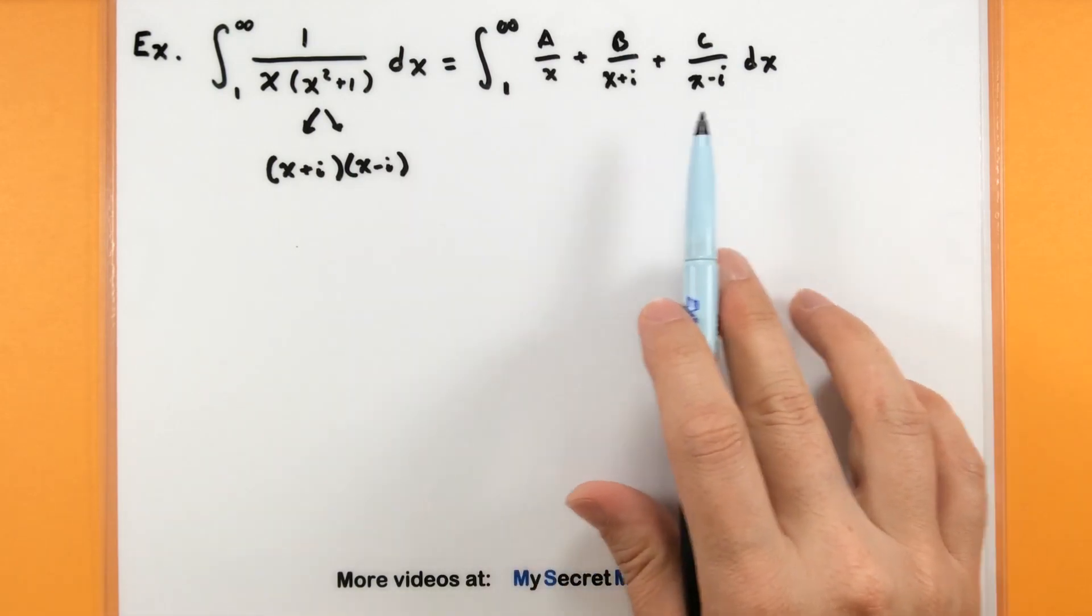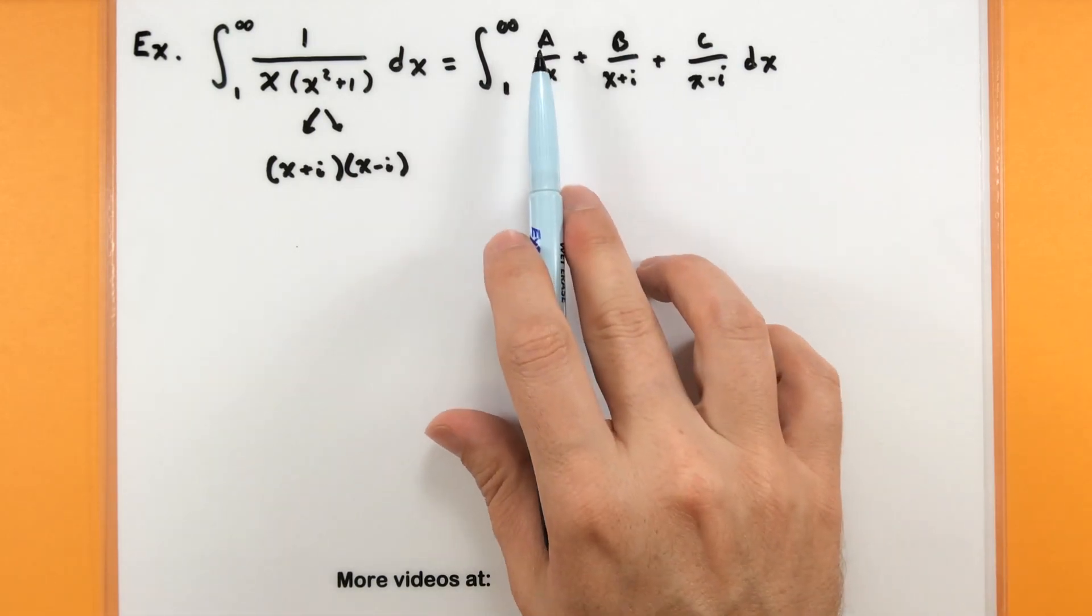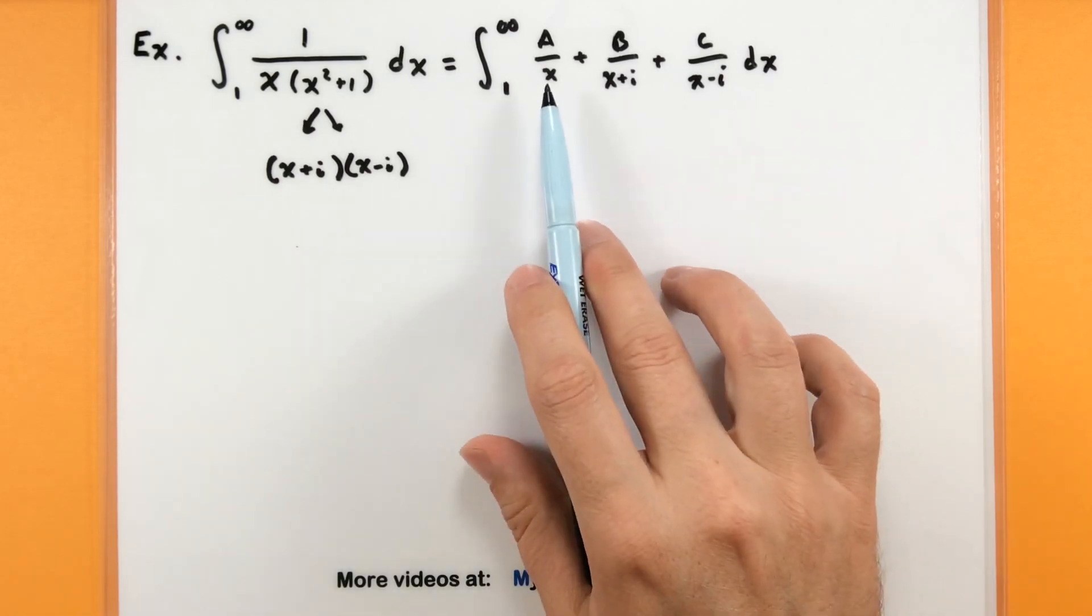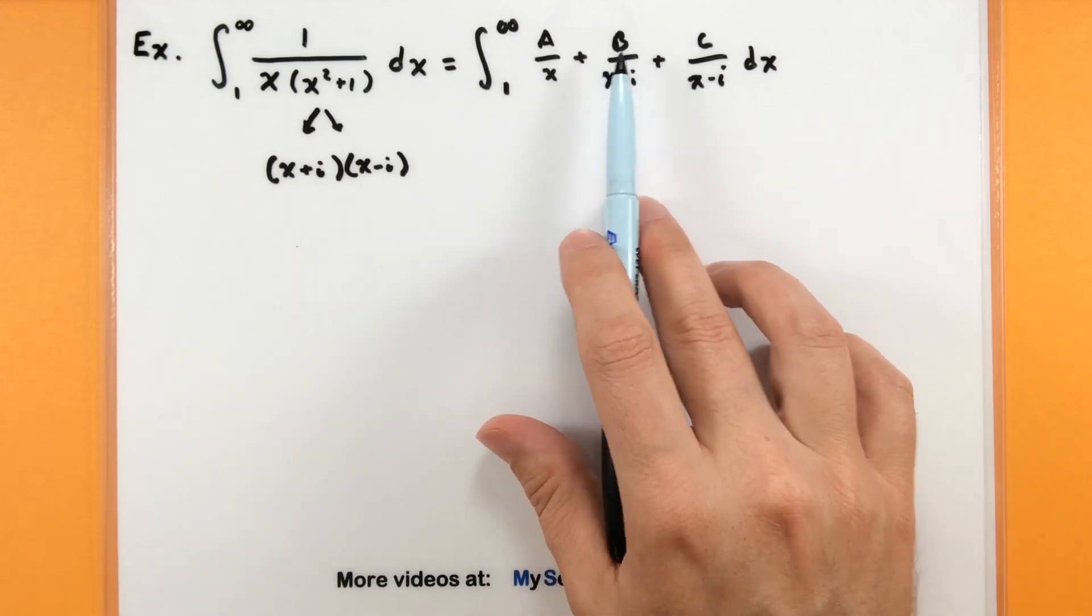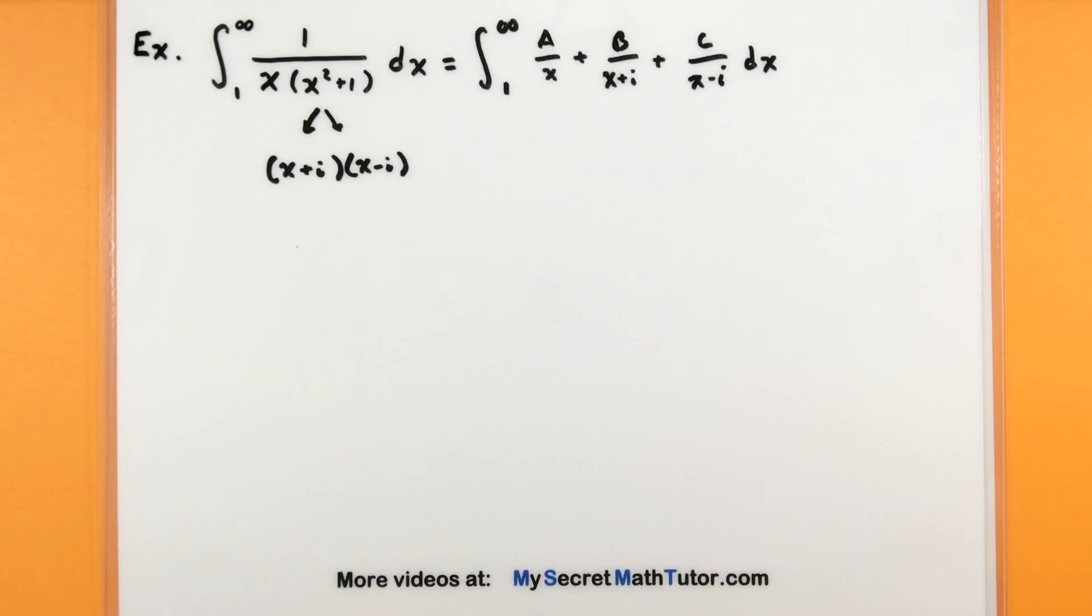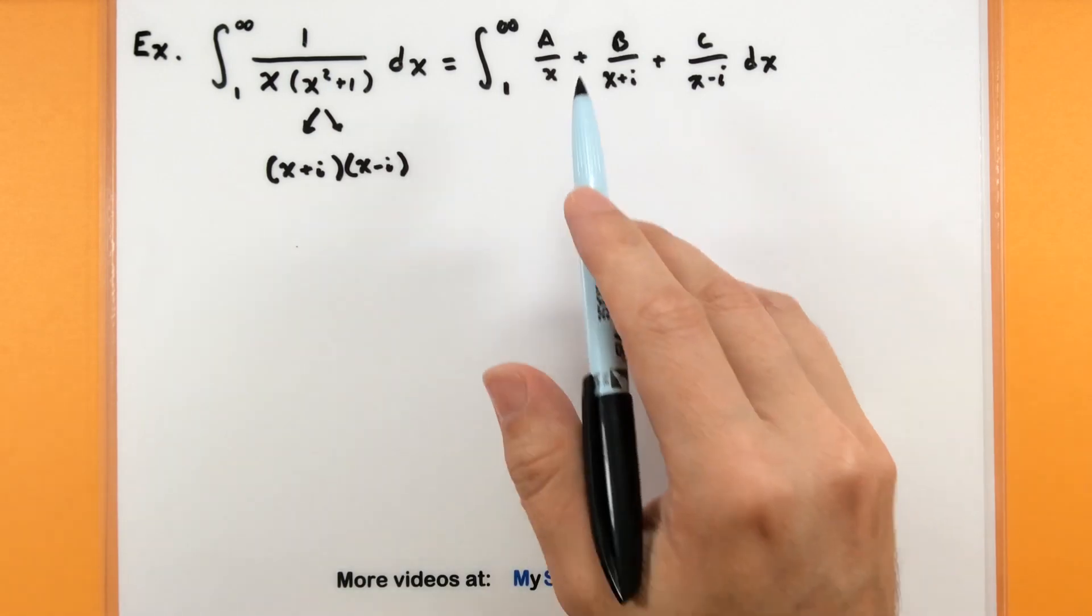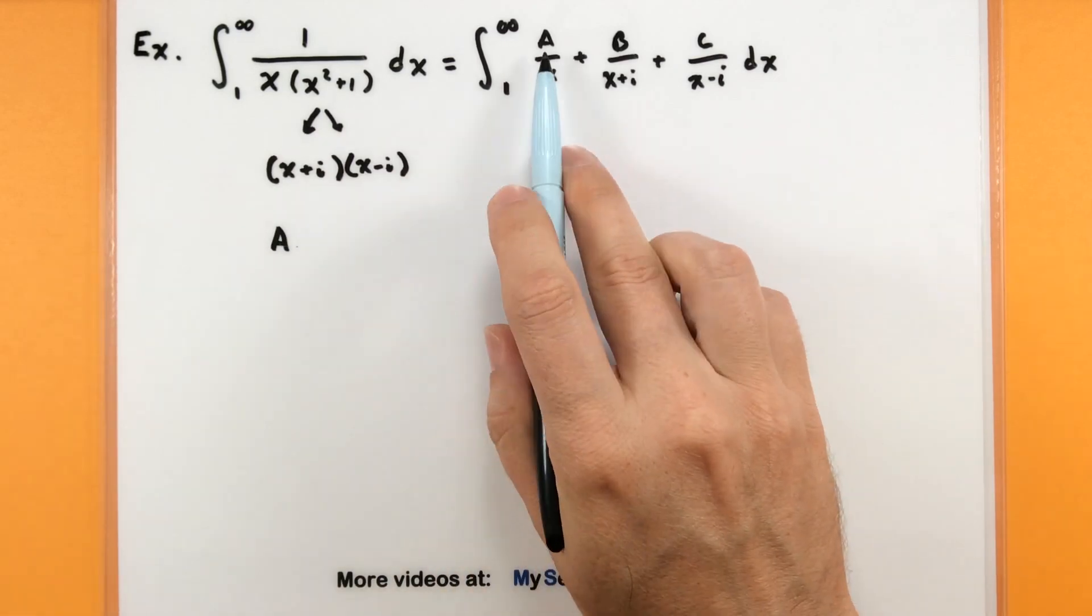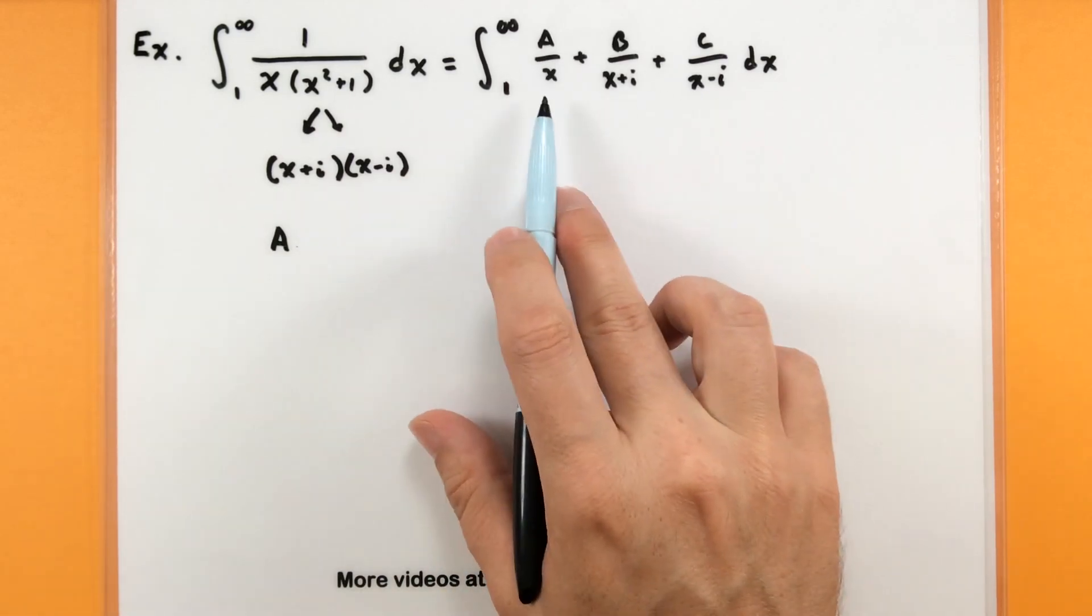Now, I'm really aiming for linear factors because this will make my partial fraction decomposition a little bit nicer. So I'll have a over x plus b over its linear term x plus i plus c over x minus i dx. Since these are all linear terms in the bottom, I just have regular coefficients in the top like a, b, and c. Where we go from here is we want to determine what these coefficients are.